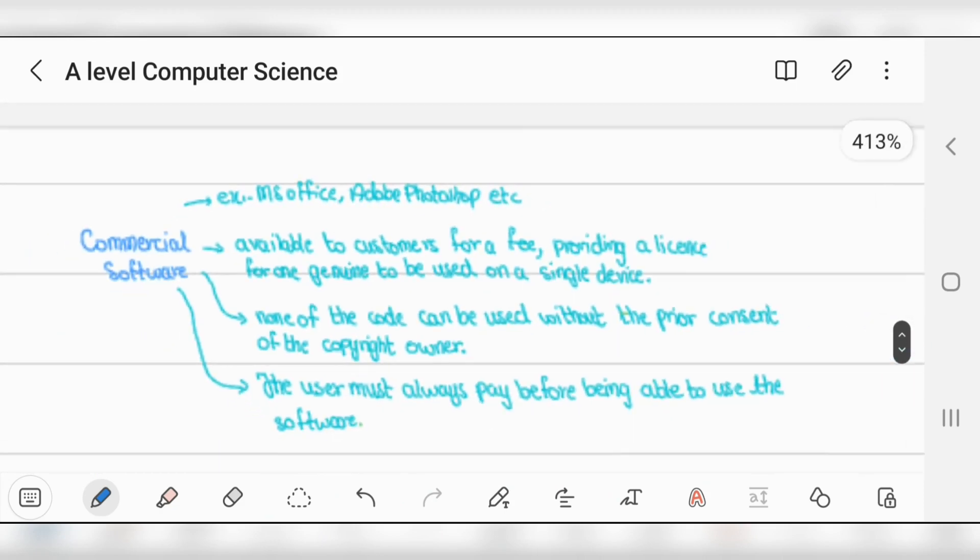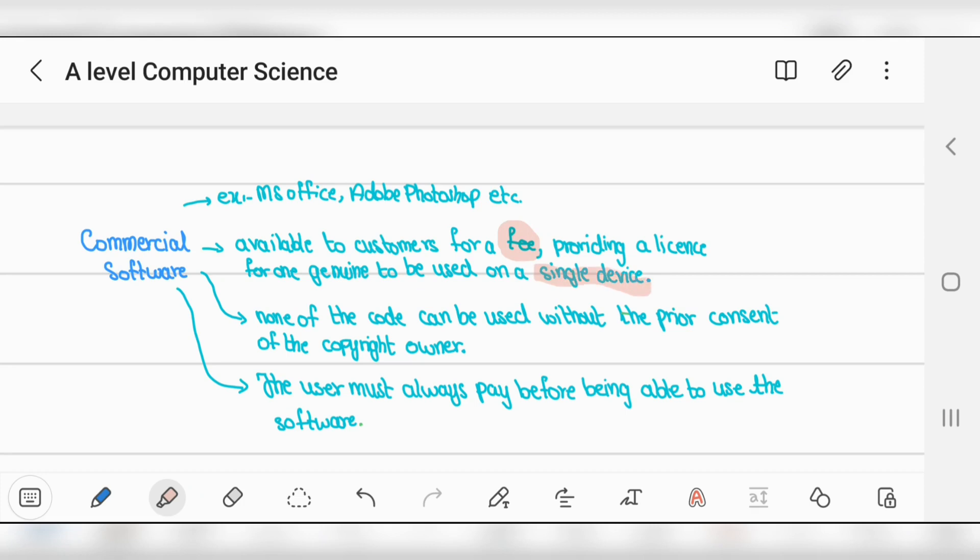Commercial software - examples are MS Office or Photoshop - is available to customers for a fee, providing a license for one genuine copy to be used on a single device. None of the code can be used without prior consent of the copyright owner.